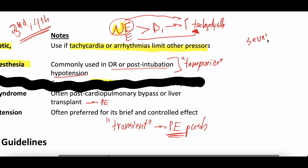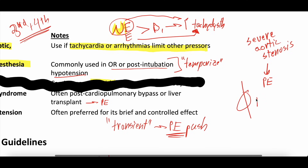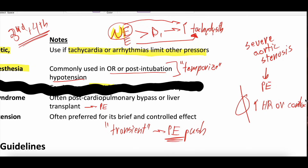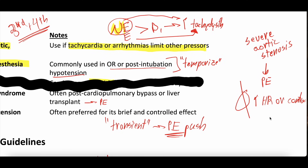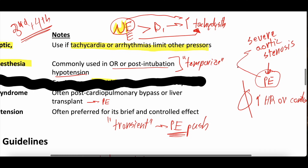One important caveat: severe aortic stenosis leading to cardiogenic shock. Oddly enough, phenylephrine can textbook-wise be classically first line in severe aortic stenosis. In that condition, you do not want to increase heart rate or contractility — though sometimes you have no choice — because you want as much filling time for the ventricle to pump against that gradient. So sometimes phenylephrine is a good first choice in patients with severe aortic stenosis.